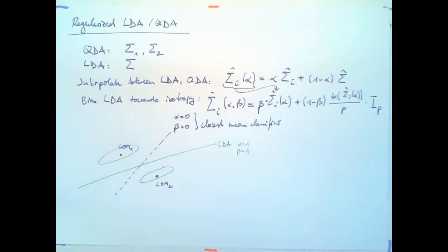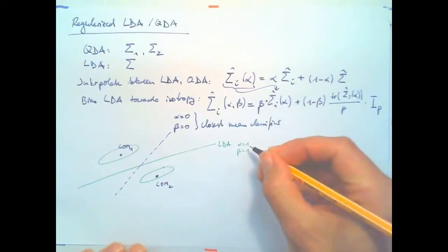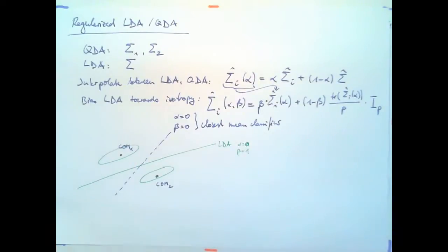This is just for class one or class two. For the LDA case, you are right. You're right. Thanks. So for the LDA case, alpha should be zero. We want none of the individual class covariance and all of the pooled covariance matrix. Thank you.